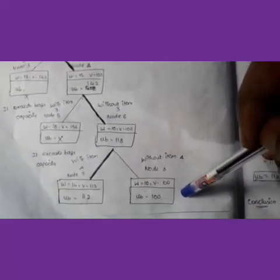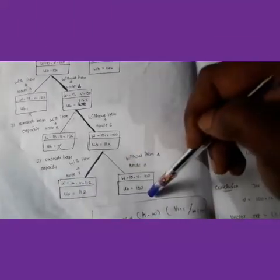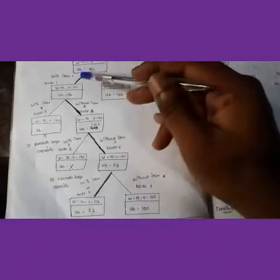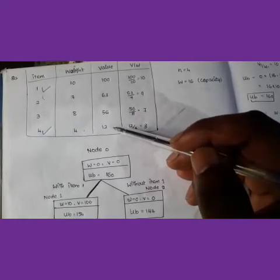The maximum upper bound is 112, achieved at Node 7. Tracing the path: item 1 is selected, item 2 is not selected, item 3 is not selected, and item 4 is selected. The total weight is 10 + 4 = 14, and the overall maximum value is 112. That is the final conclusion.